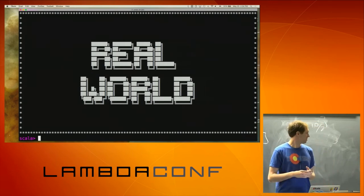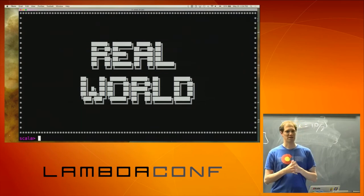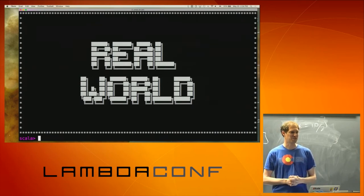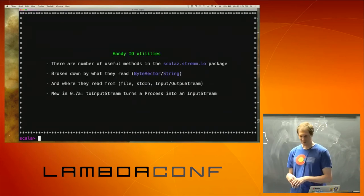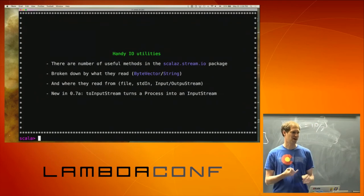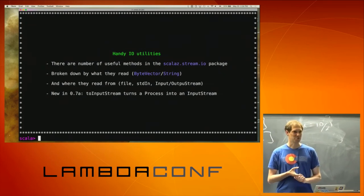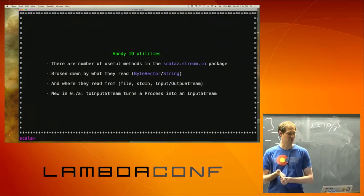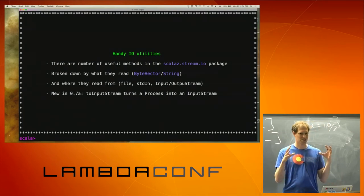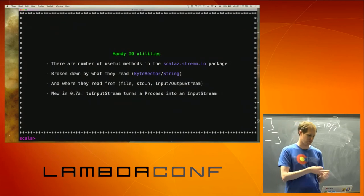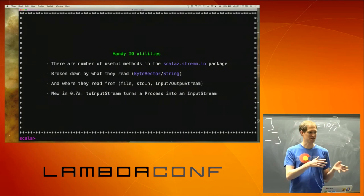Real world usage. Unless you have a really boring job, you're probably not going to be using emit and emitAll all that often — typically you're going to be working with effectful things: IO, files, network, sockets. We use AMQP, we use RabbitMQ, we have process wrappers around that. We use Kafka, we have process wrappers around that. There are a number of really handy utilities in the ScalaZ Stream IO package — mostly geared around reading and writing from files, standard in/out, or from input/output streams. They're broken down by what they read: whether it's a ByteVector — ByteVector comes from Scodec, which is an awesome library for dealing with binary data — or strings, typically lines from standard in/out.